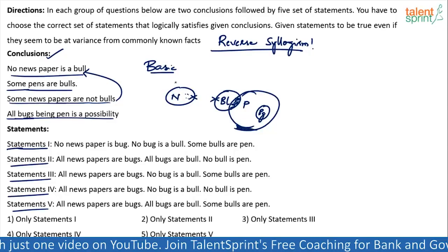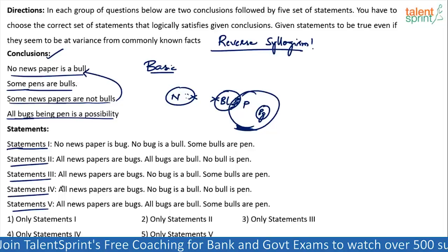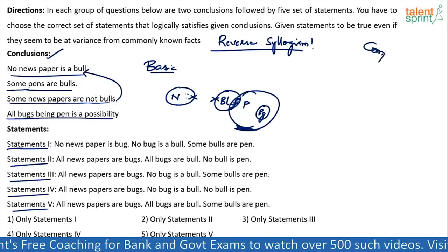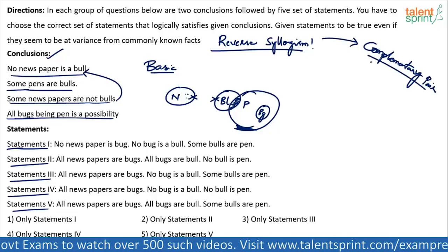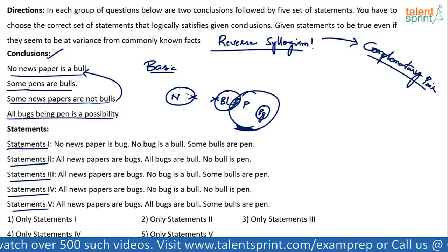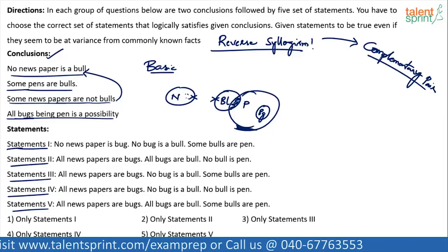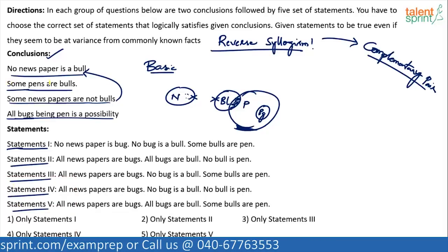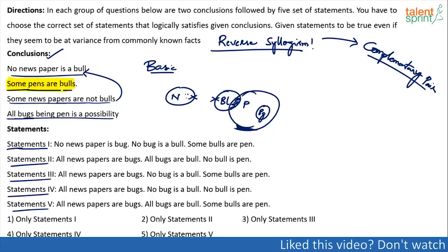The basic diagram as such is not required, but for clear understanding I'm drawing it here. Instead of drawing diagrams for the statements, let us first eliminate the wrong set of statements. We have learned about complement pairs — that concept will be very useful in reverse syllogism. For example, look at the conclusion 'some pens are bulls.' What is the complementary for 'some pens are bulls'? It is 'no pen is a bull.' If 'some pens are bulls' is definitely true, then 'no pen is a bull' will be false.